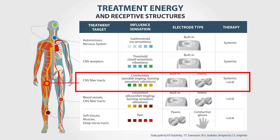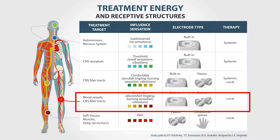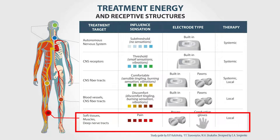The next level will start to focus the influence under the device's electrode, and the receptive structures will mainly be the blood vessels and the big nerves. By increasing the energy even more, we focus particularly at the sub-electrode surface, influencing soft tissues, muscles, and deep nerve tracts.